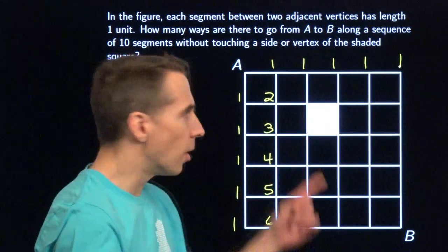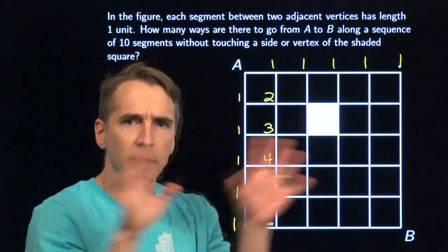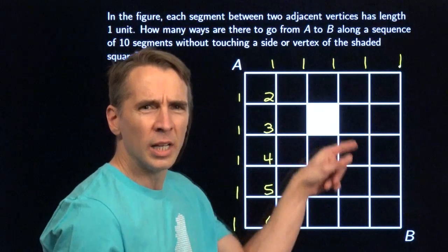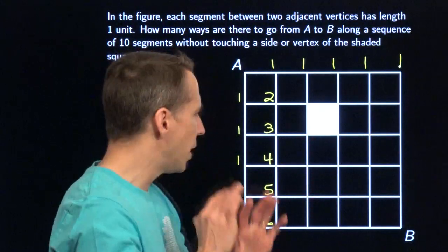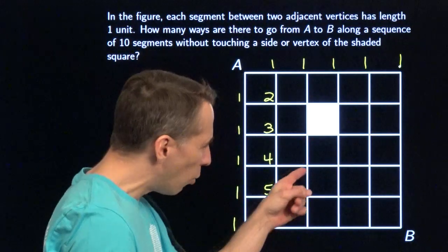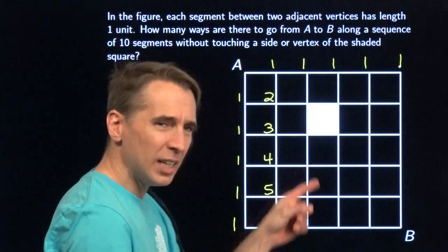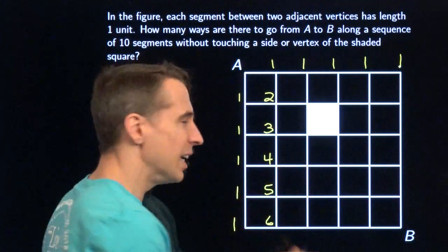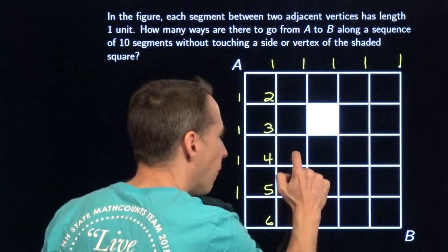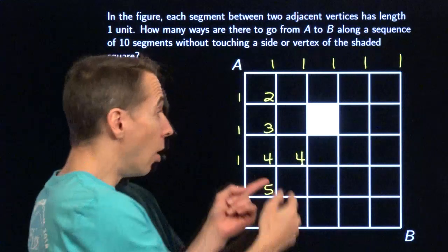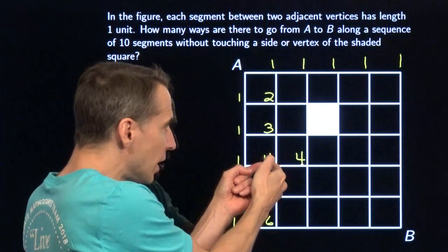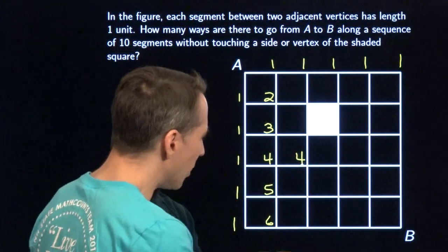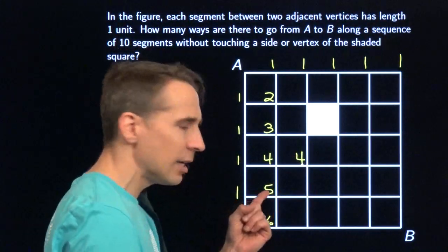And there are zero ways to get right there — not allowed to go there, not allowed to go there, not allowed to go there, not allowed to go there. So right here, the only way to get here is to get to this point and then go right. There are four ways to get here — all four ways you get there and then take a right.